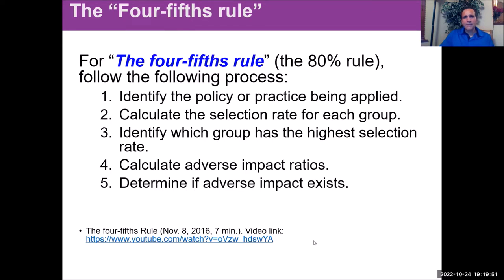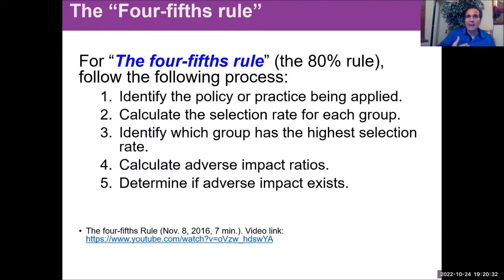There are five steps to follow in this process. Number one: identify the policy or practice being applied. Number two: calculate the selection rate for each group — both majority and minority. Number three: identify which group has the highest selection rate. Number four: calculate the adverse impact ratios. And fifth: determine if adverse impact actually exists. As a result of these five steps, you would make a determination to remedy the situation and prevent this from happening to future candidates.